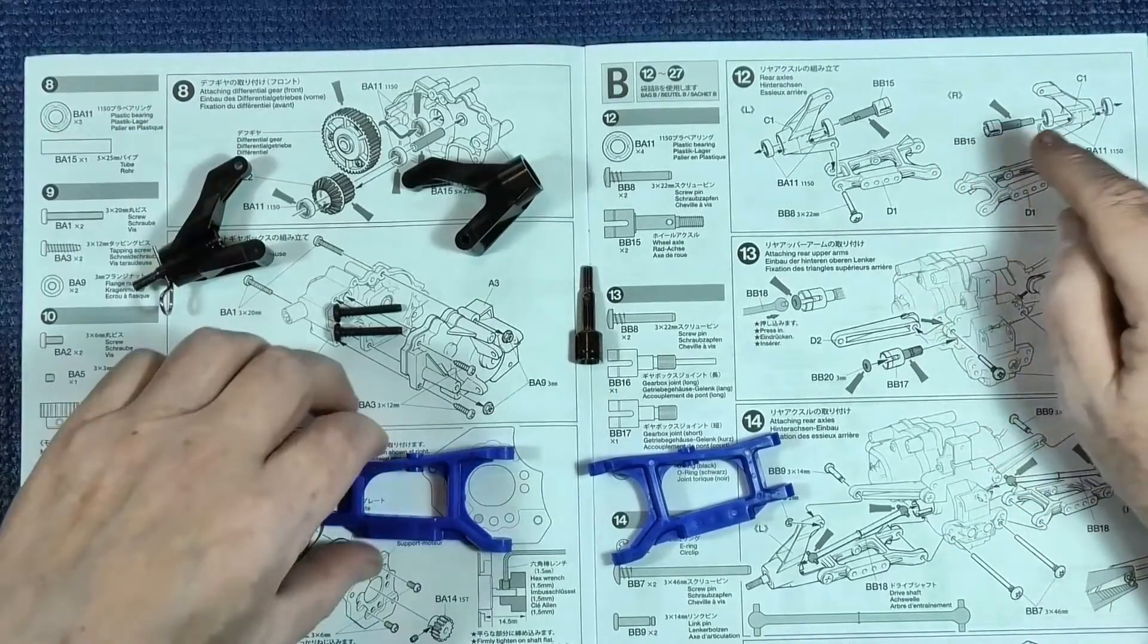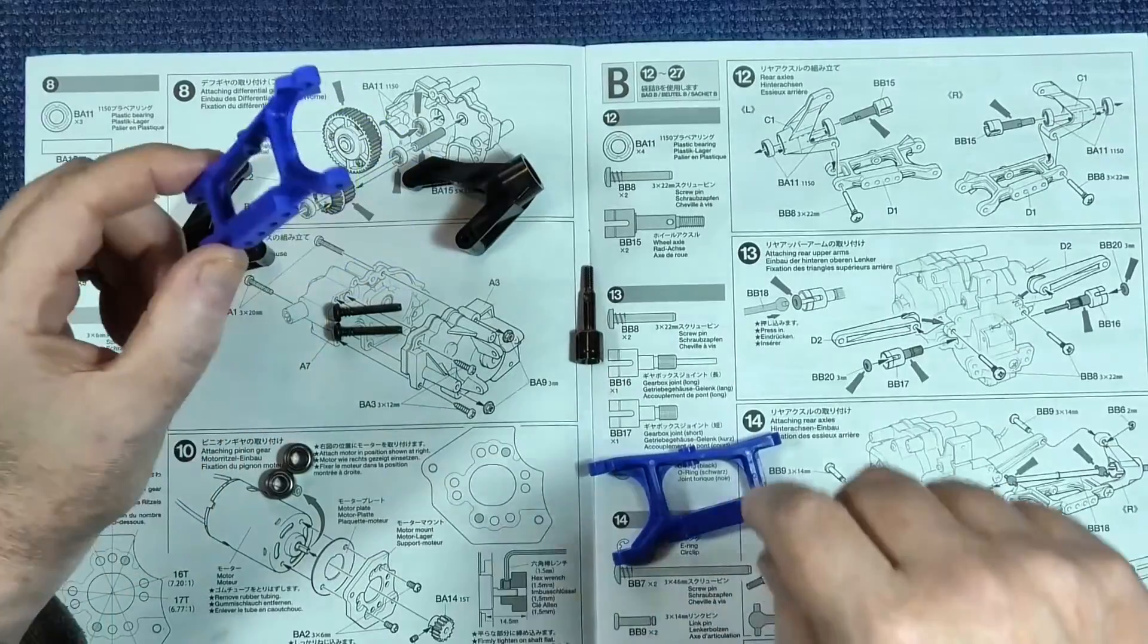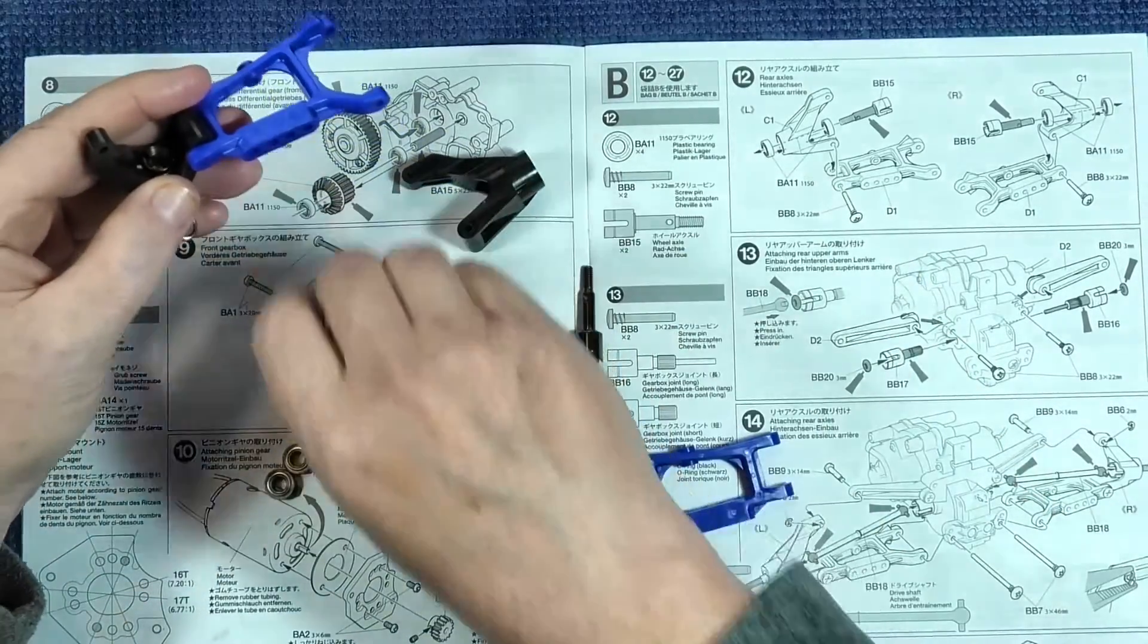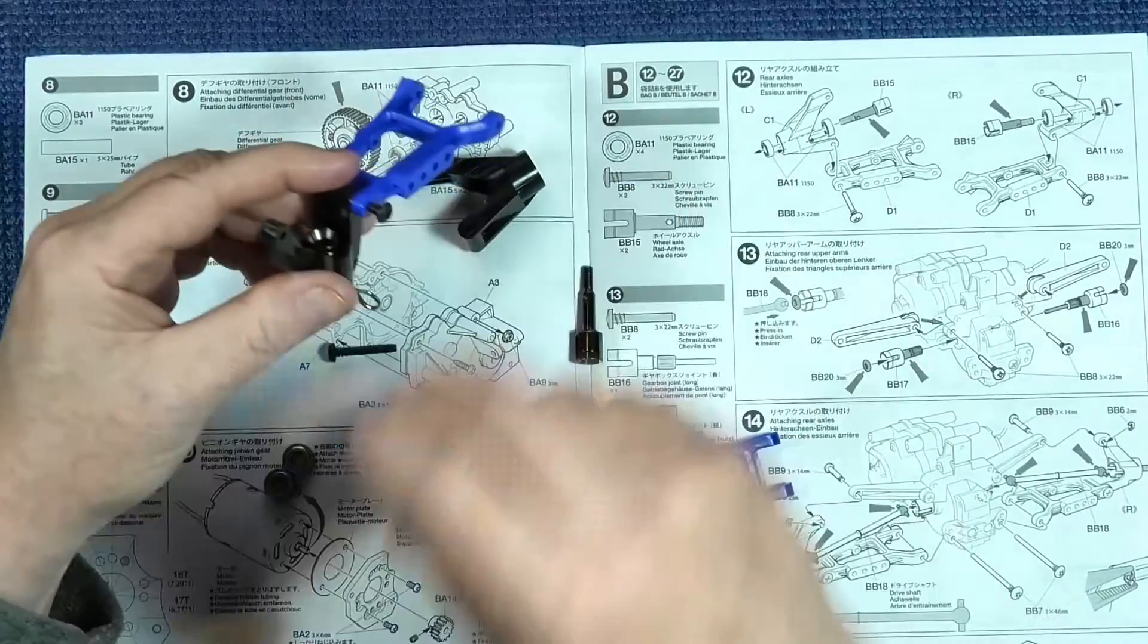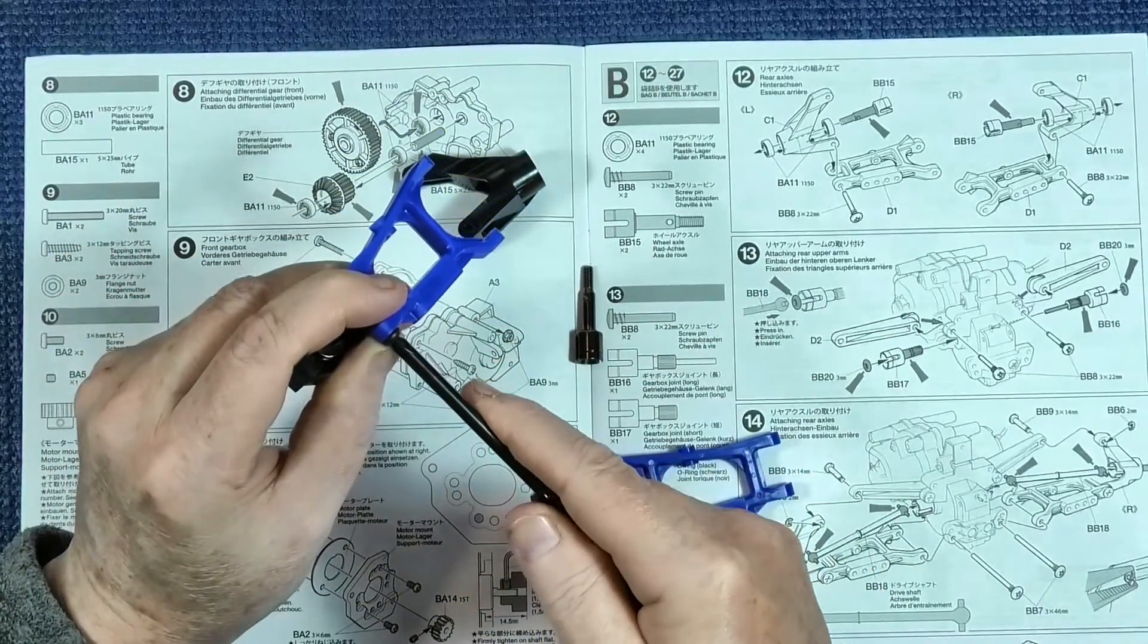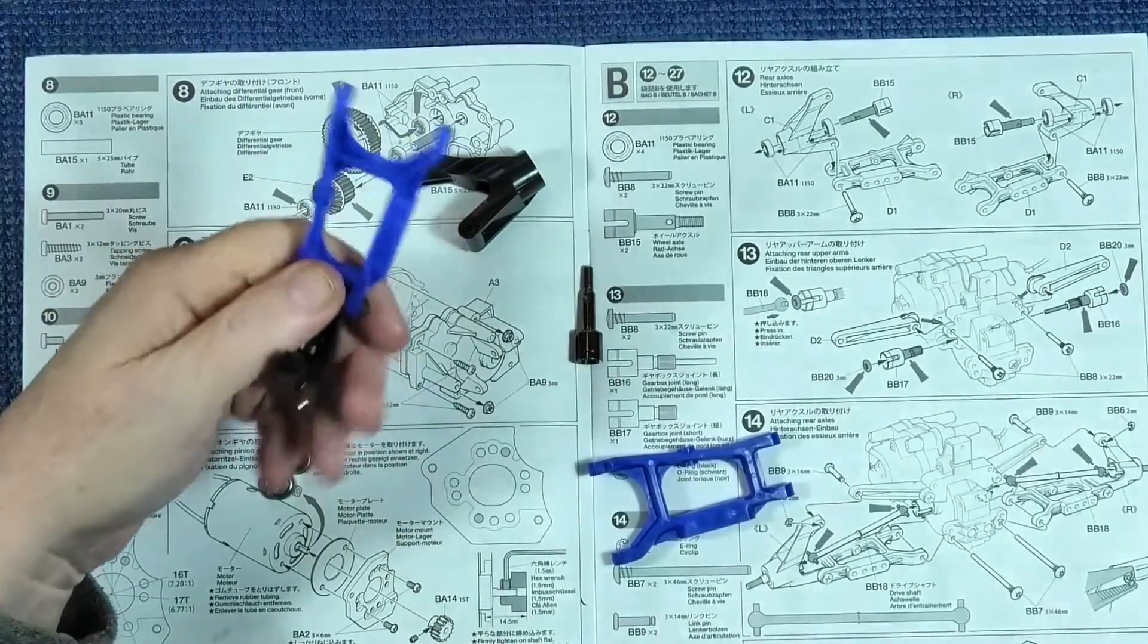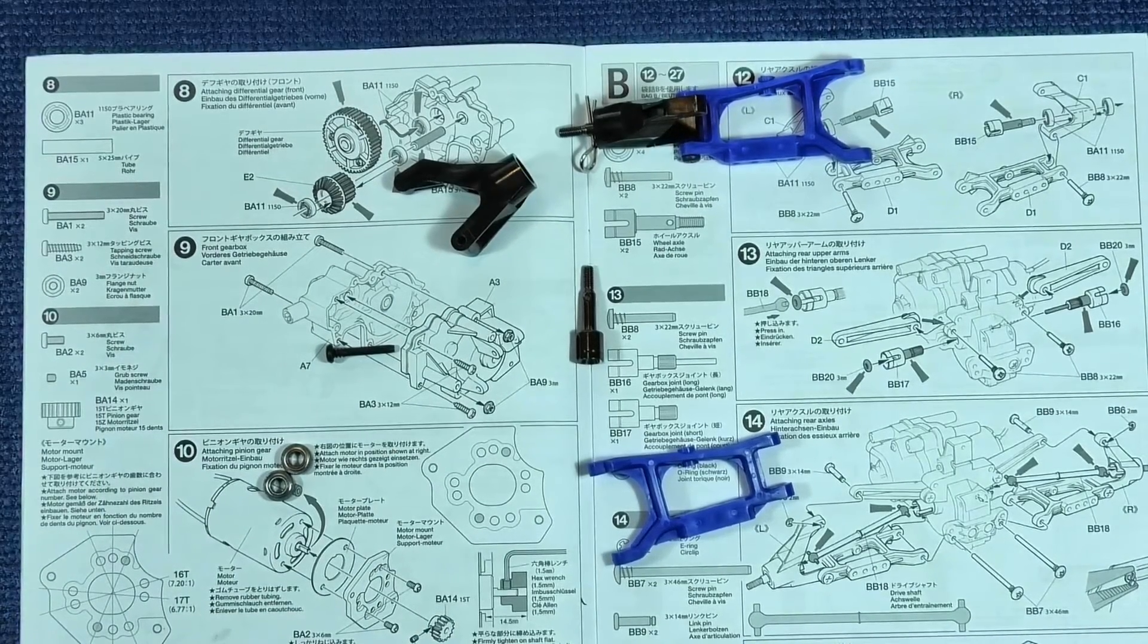Then you need to check the guide for the orientation of these wishbones, these are the lower wishbones or A-arms as other people call them. This is the left side. It's a simple case of pushing that to the upright axle carrier, popping your screw pin in, and then tightening it up. Not too tight because this is fairly flexible plastic, so it's fairly easy to strip the thread if you over tighten. That's your left side done, and same again for the right side.